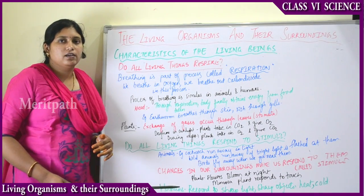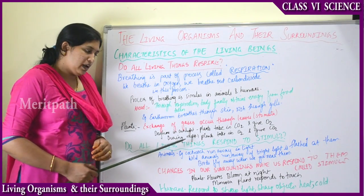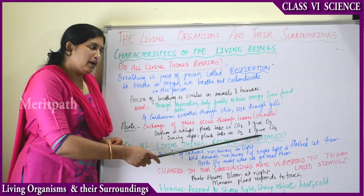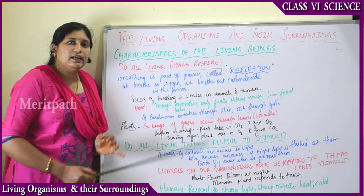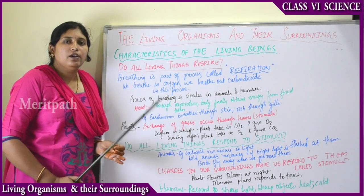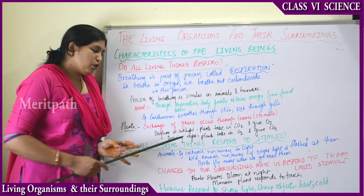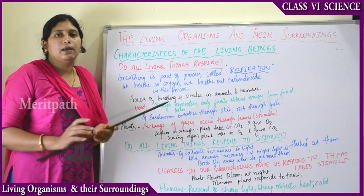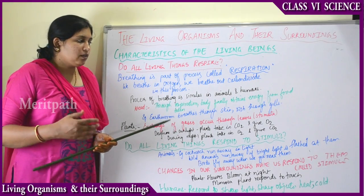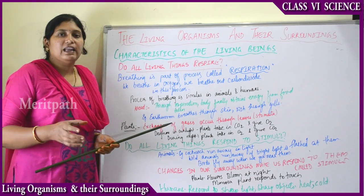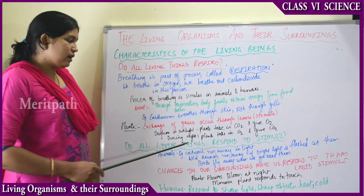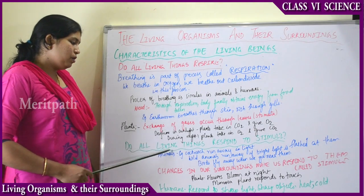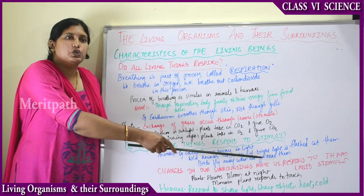During the daytime in sunlight, plants take in carbon dioxide and give out oxygen. But during the night time, plants take in oxygen and give out carbon dioxide. Even though during the night plants take in oxygen, they do not take much — they take a very little amount of oxygen. That is how plants also breathe.